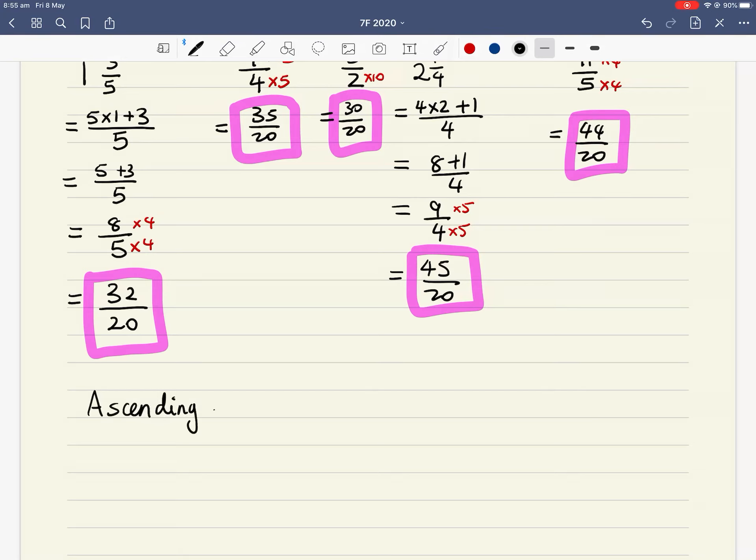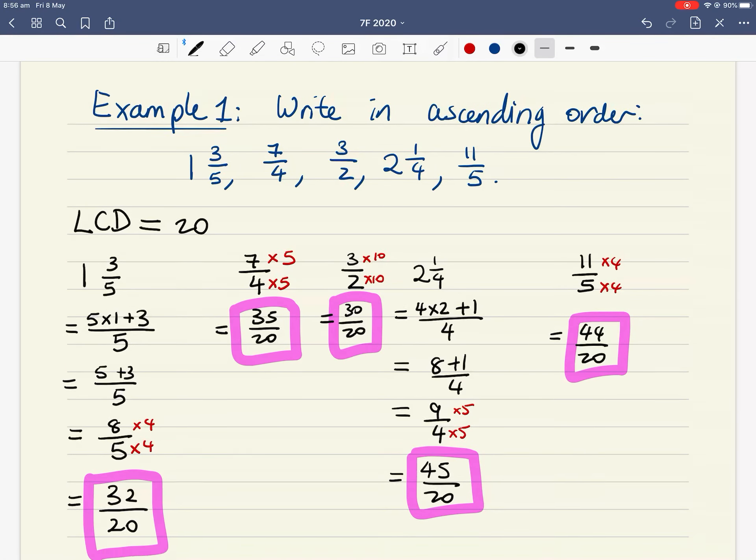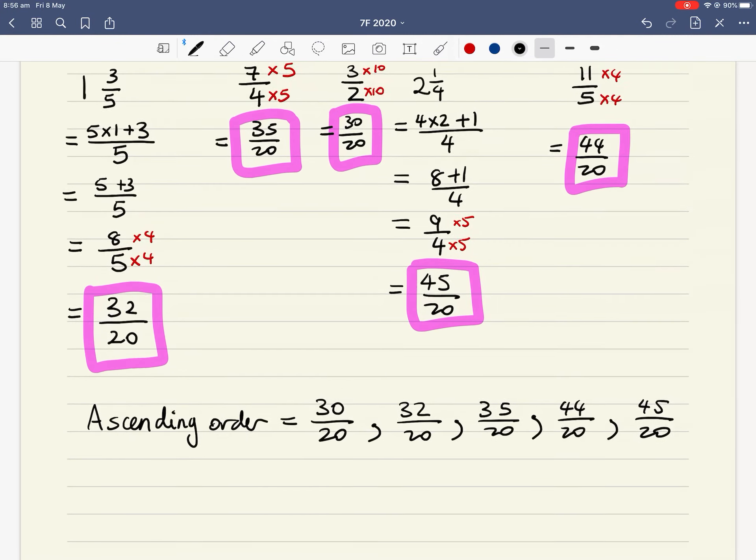We can say that our ascending order, the English word equals, ascending order equals, our smallest fraction is 30 over 20, then comma, 32 over 20. Next one, comma, is 35 over 20. Next one is 44 over 20. And finally, our last fraction, the biggest one is 45 over 20. Now, please don't just leave your answer as these improper fractions. We started off with 1 and 3 fifths. My final answer somewhere should have 1 and 3 fifths. This is where step 4 comes in. Make sure you write your answer in the original form.